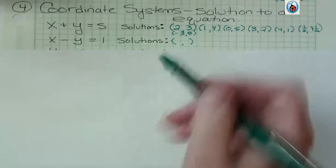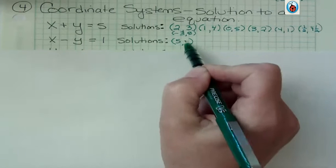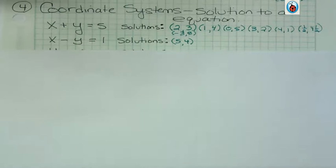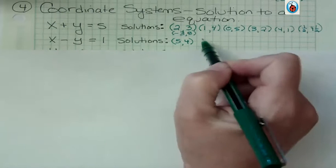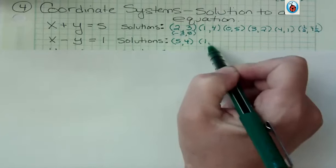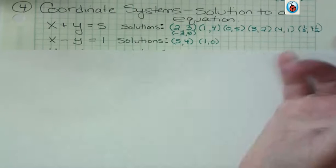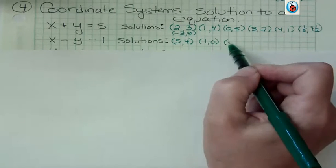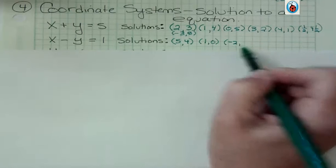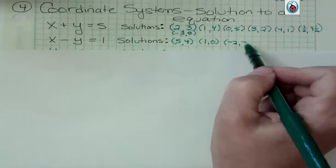So all we're saying is like if x was 5, then y could be 4. And that would make that true, right? If x was 1, y could be 0. 1 minus 0 is 1.